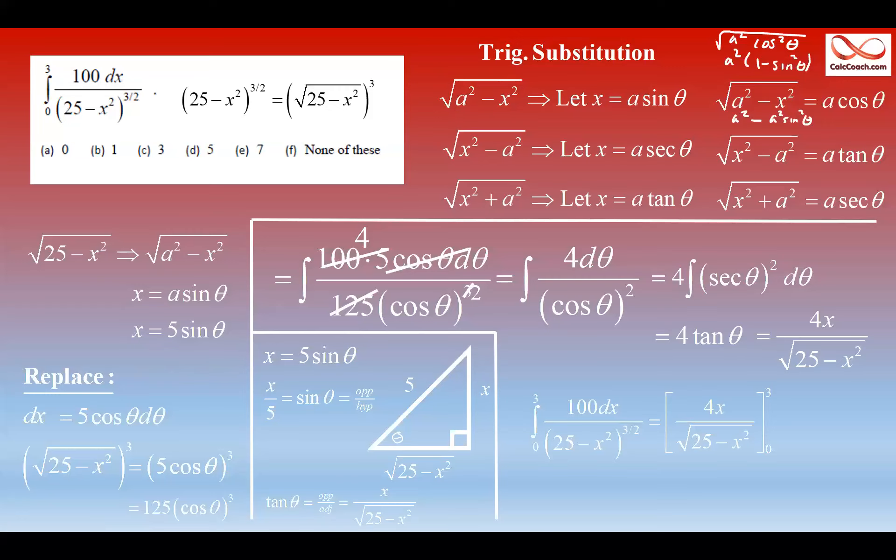The antiderivative is that guy. Now, fundamental theorem of calculus, plug a 3 in, plug a 0 in. But thankfully, plugging a 0 in gives us 0. Plugging a 3 in gives us 12 over the square root of 16. That's 4, 12 over 4. So, the answer is 3. We did it. Good job.